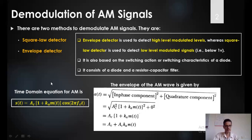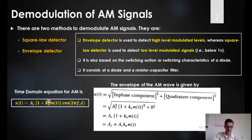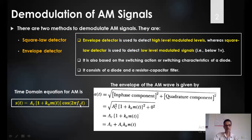As you already know, the time domain equation for AM is the conventional AM equation, where the amplitude of the message signal changes and accordingly the amplitude of this carrier with frequency FC also changes. Now, what do we mean by envelope detection? What is the meaning of the envelope, first of all?